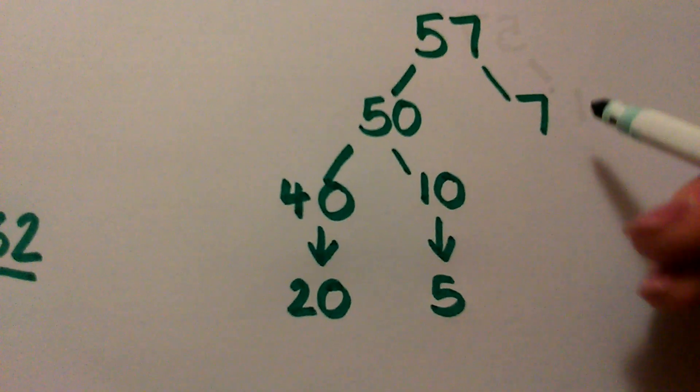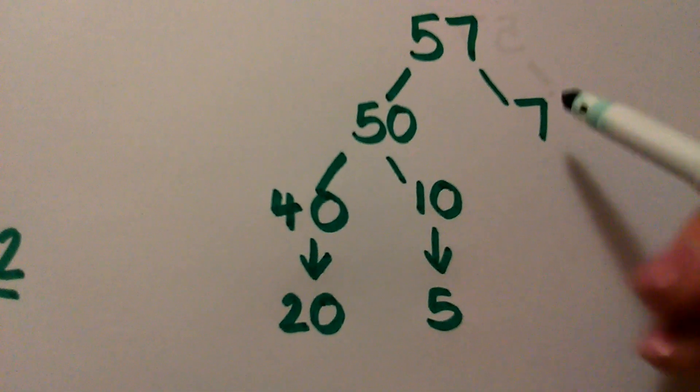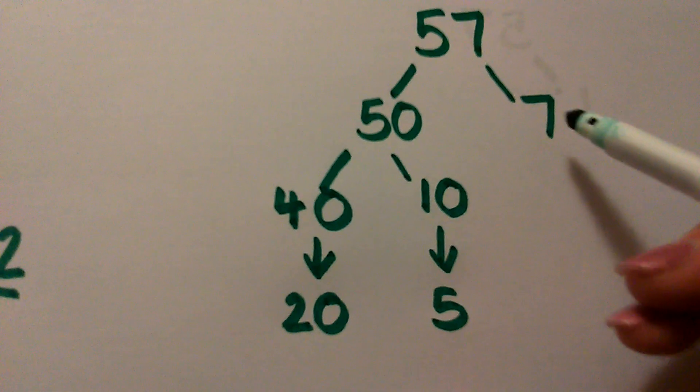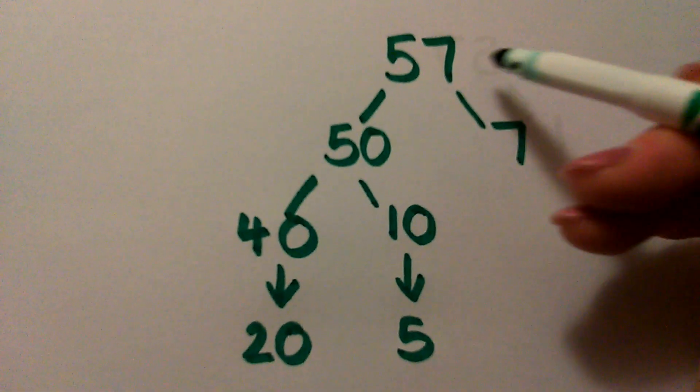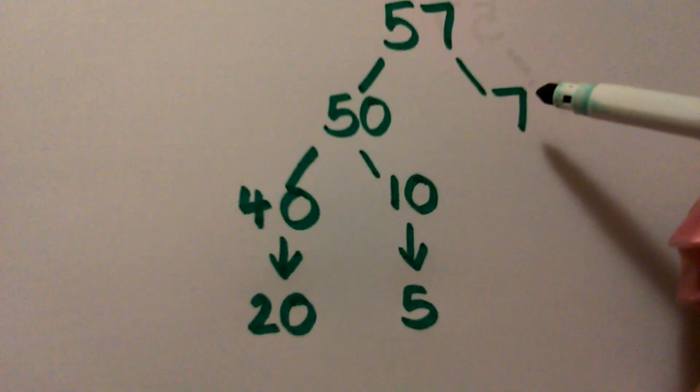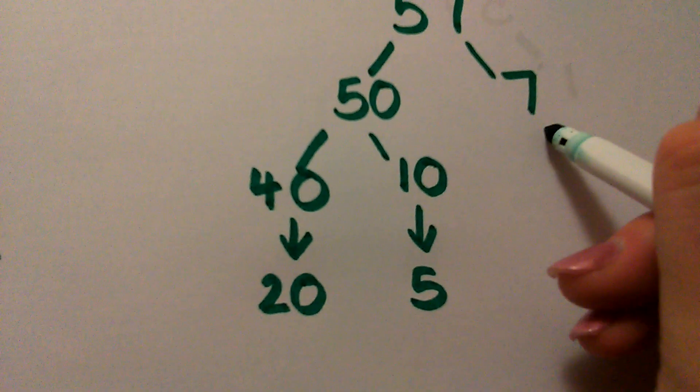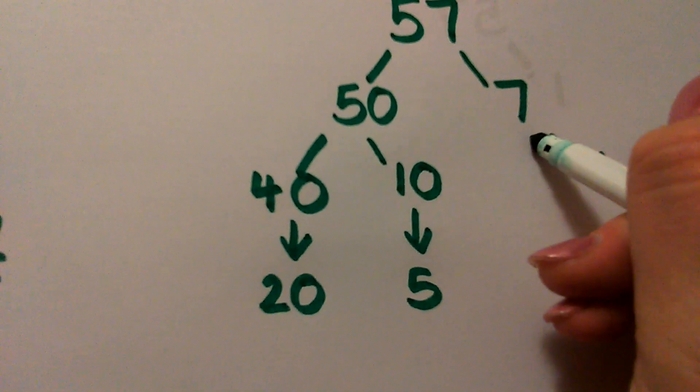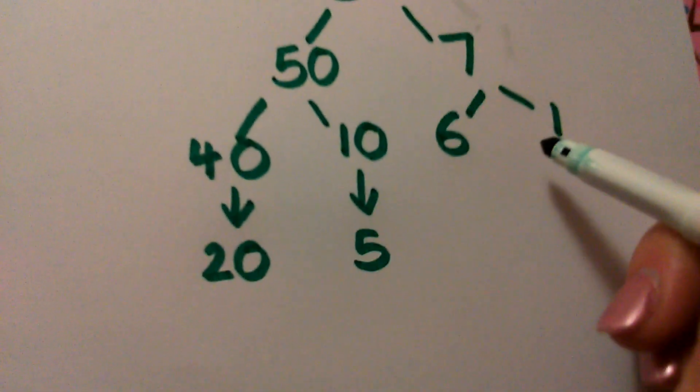And then we can do the same with the 7. So again, if you can do that in your heads, that's great. But if you need a little bit of help, then you can partition off this time because we're in the units column. In the ones column, we can partition off 1. 7 with 1 partitioned off leaves us with 6. So 6 and 1 make our 7.